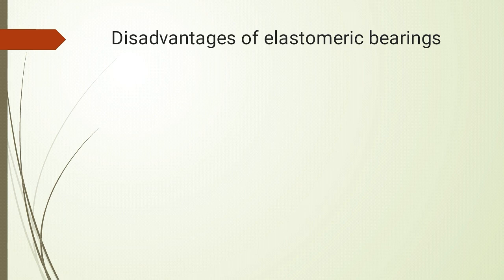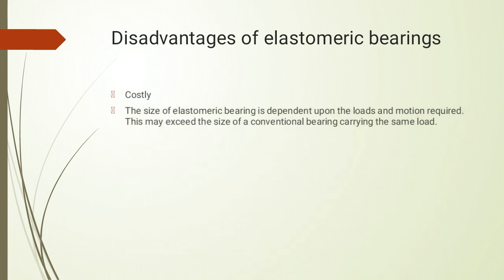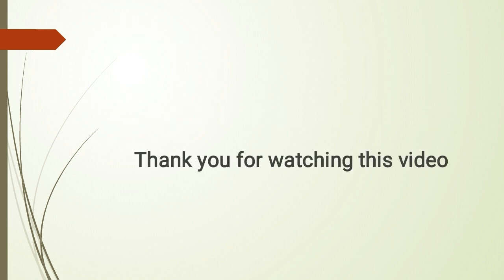Disadvantage क्या हो सकती है: पहली चीज़ जहाँ पर rubber यानि elastomeric rubber use कर रहे हैं जो अपने आप में costly चीज़ है, और metal भी use कर रहे हैं। अगर hinge की बात करें तो सिर्फ metal होता है, लेकिन यहाँ पर metal के अलावा rubber भी use हो रहा है — तो यह costly हो गया। इसमें load limitations भी हैं। I hope the topic of elastomeric bearing is now understood. Thank you for watching this video — I will be back with the next video।